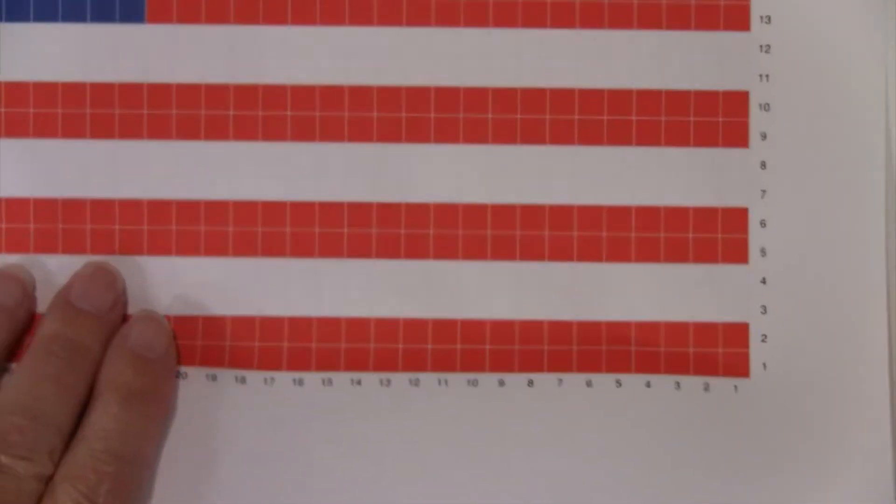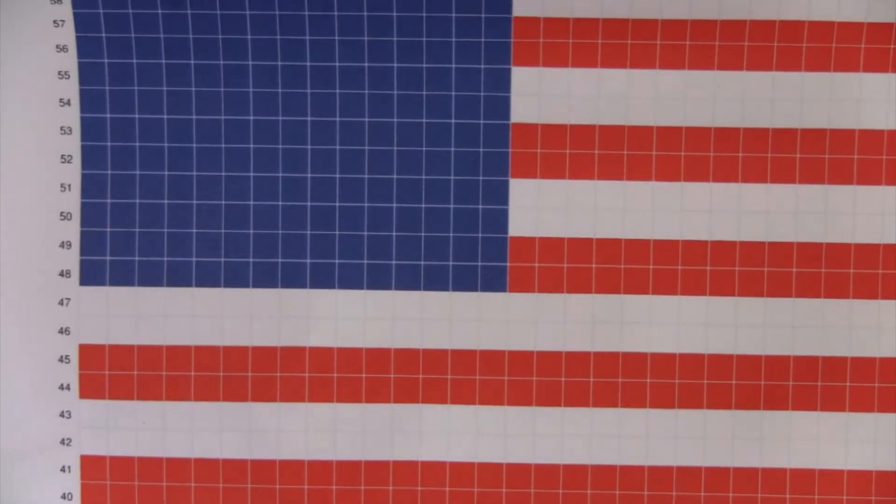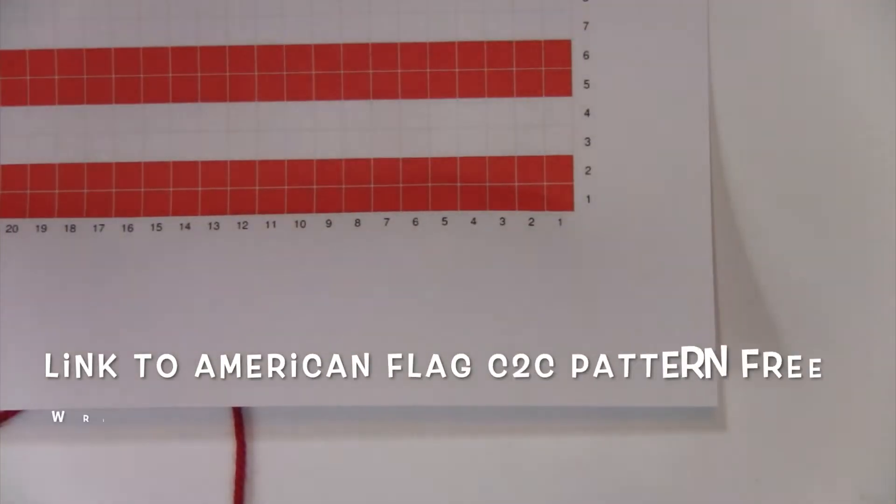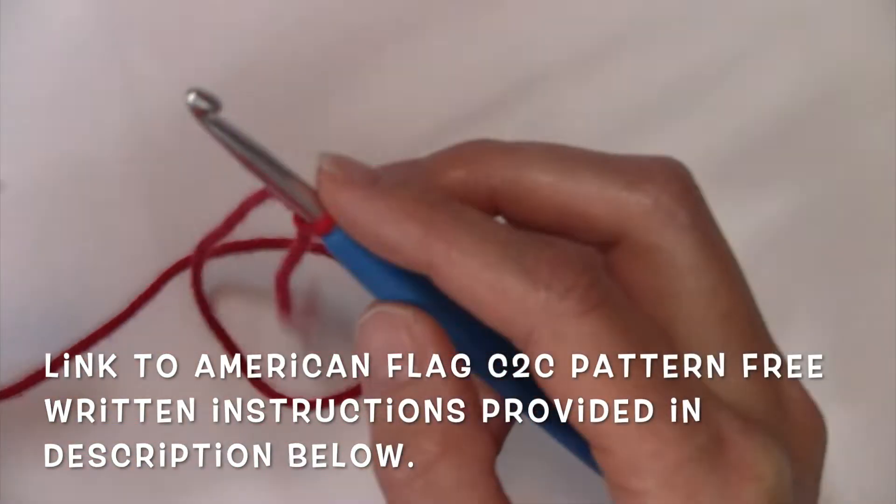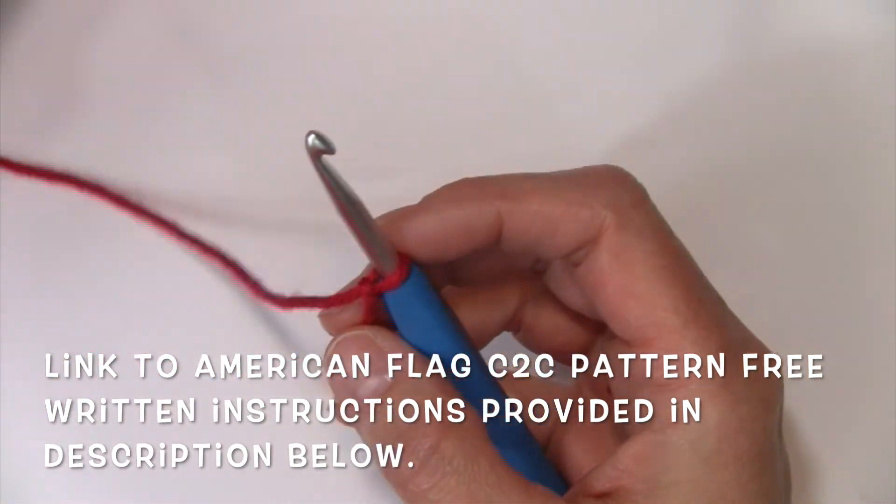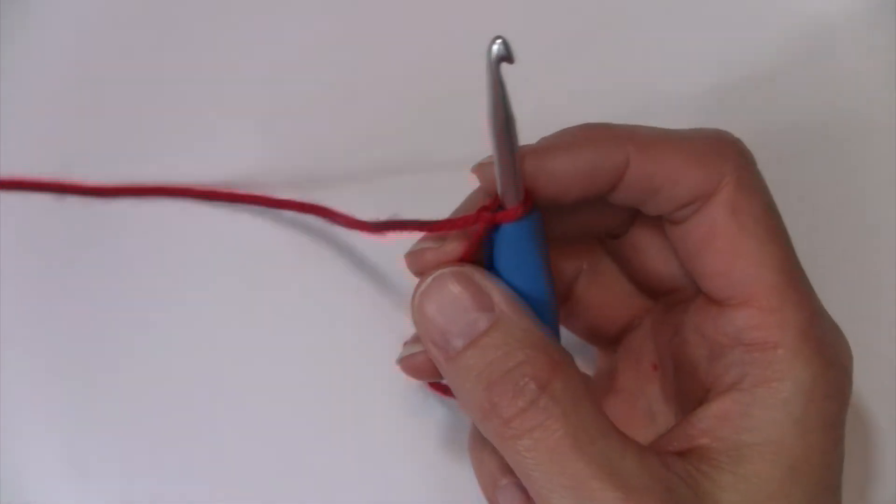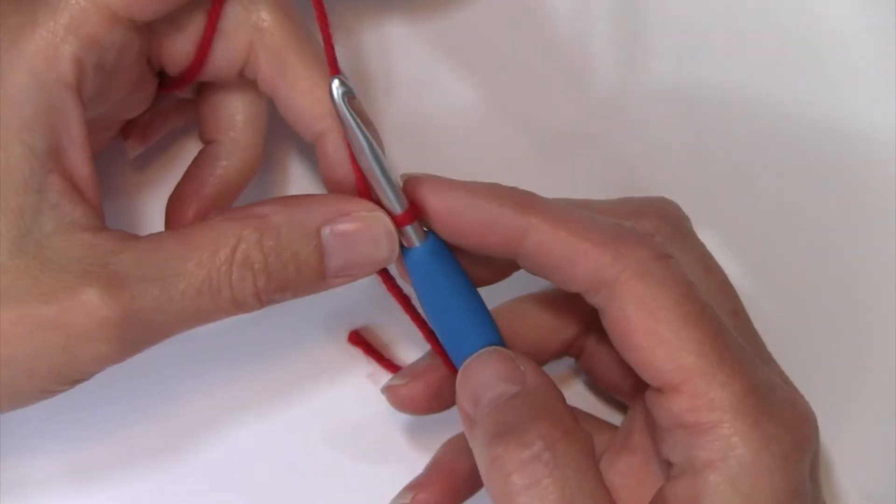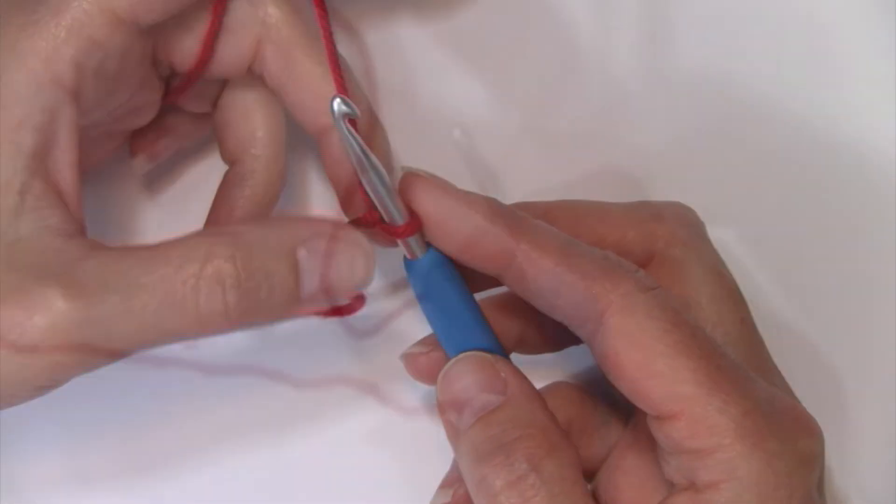I use this for my American flag placemat and in order to get the number of stripes and all of that it would have just been extremely large if I would have tried to do that in a double crochet. So that gives you a little background and why you might want to use that instead of the regular double crochet.